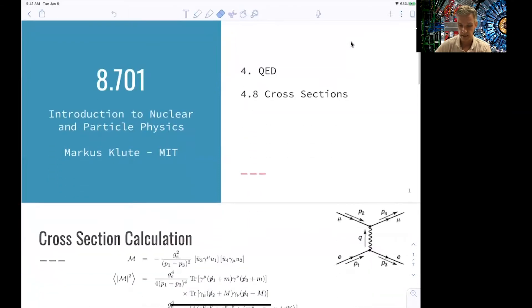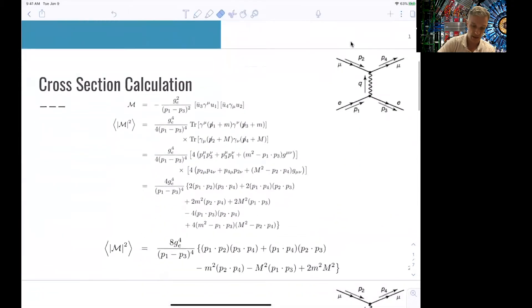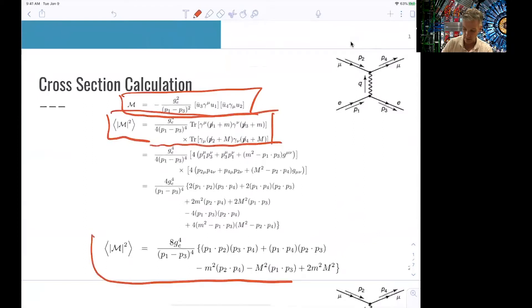So let's summarize. We have seen that we can set up the matrix element using Feynman rules for QED. We have seen how to set up the spin averaged matrix elements squared using the traces. Now, we would have to evaluate the traces in order to derive this formula here.